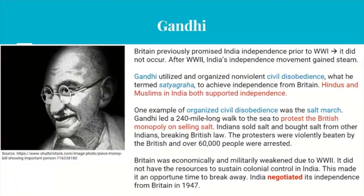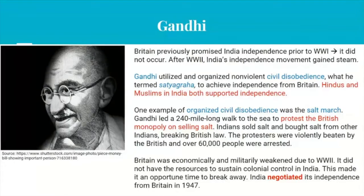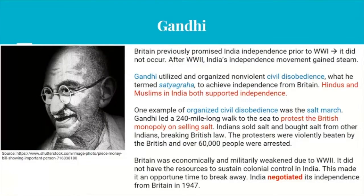To give a sense of scale: Hoboken is about one square mile, so walking around it is close to four miles - imagine walking 240 miles to make your point. That illustrates how strongly these Indians wanted independence. Britain was economically and militarily weakened due to World War II and didn't have the resources to sustain colonial control in India. This was the opportune time for Indians to break away, and they negotiated their independence from Britain in 1947.